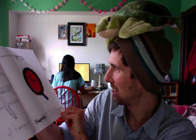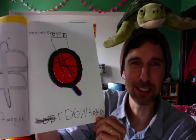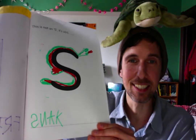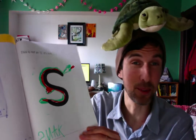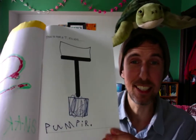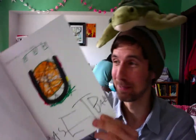This is not a Q — I'm not sure what that says. Maybe Golden State Warriors. This is not an R, it's a freezer. This is not an S, it's a snake. That one did start with an S — snake, right? This is not a T, it's an air pump. This is not a U, it's another basketball. Can you believe it?